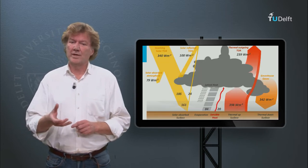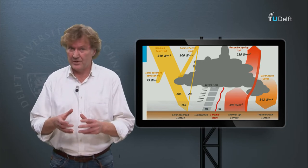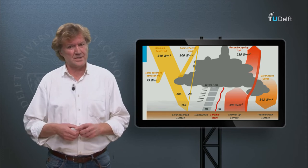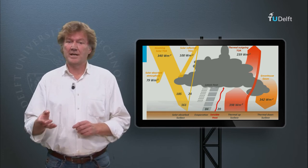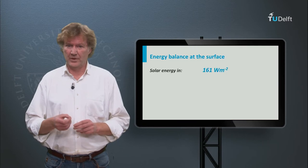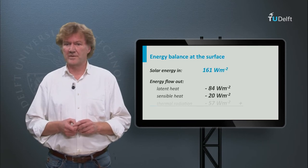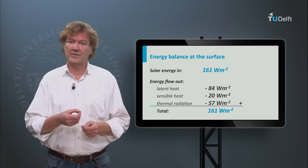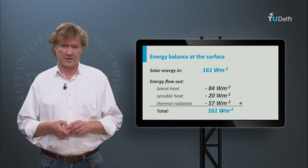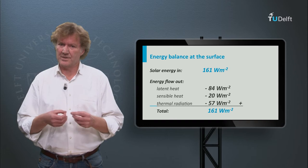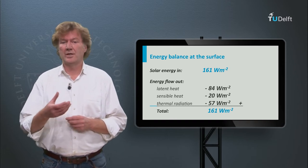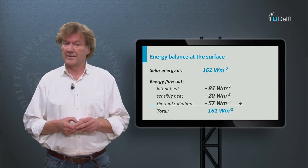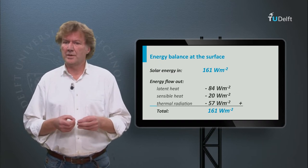Let's now have a look at the surface of the earth. In a state of equilibrium, the solar energy entering the surface has to be balanced. The earth gains 160 watts per square meter. It loses 84 in the form of latent heat and 20 in the form of sensible heat. To restore the energy balance, the surface should only radiate another 47 watts per square meter. But it radiates much more — 398. What is going on?